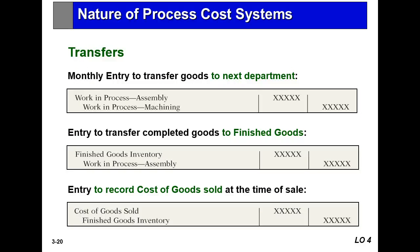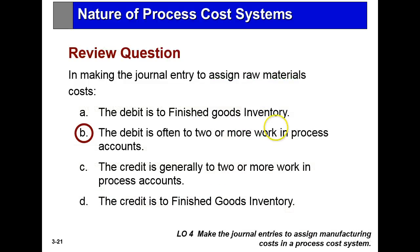Once one department is completed with the work, it gets moved to another department, and then another. It continues to flow into work-in-process from department A to department B to department C until it's finished. In making the journal entry to assign raw material costs, the debit is often to two or more work-in-process accounts, because for this system to complete itself, it goes from one process to another.